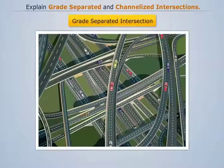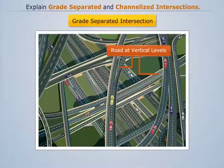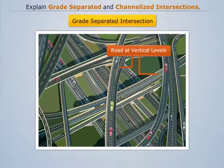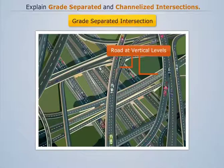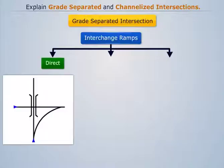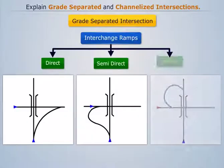Grade-separated intersections separate intersecting roads by means of a bridge or interchange, thus eliminating all crossing conflicts at the intersection. The interchange ramps may be classified as direct, semi-direct, and indirect.